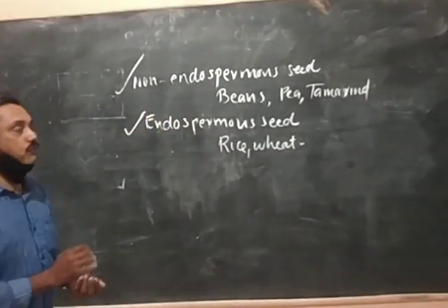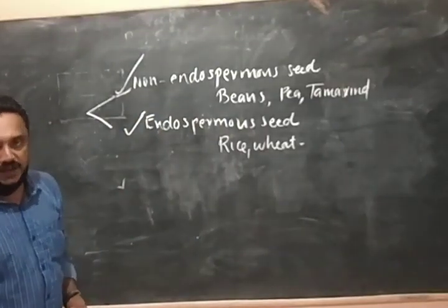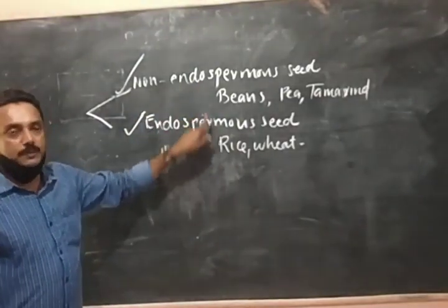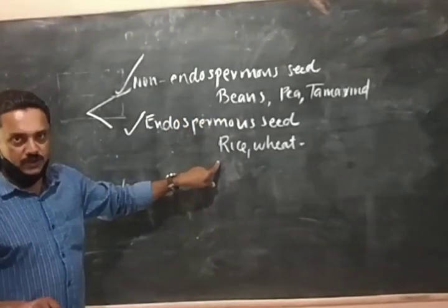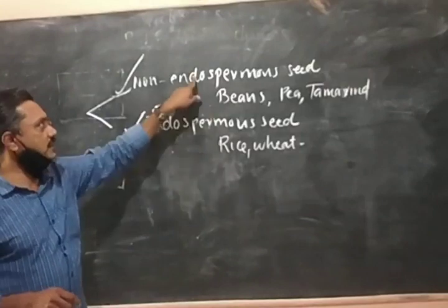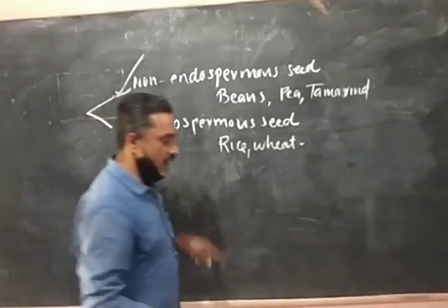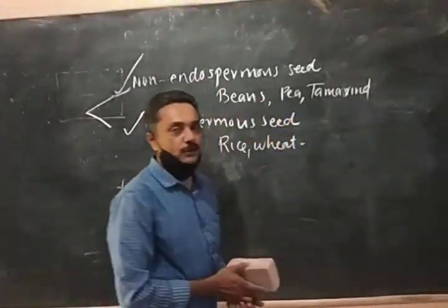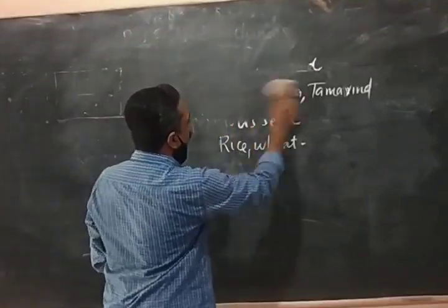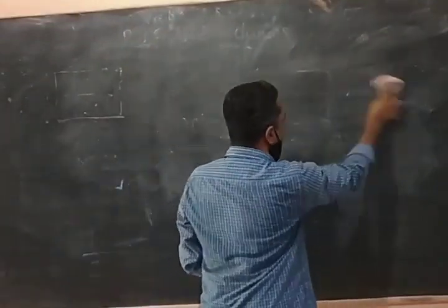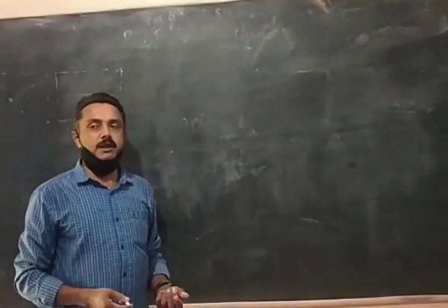There are two types of seeds based on the presence or absence of endosperm: endospermic seed (albuminous) and non-endospermic seed (exalbuminous). Endosperm development may be of cellular or nuclear type. Endosperm may be present or absent in the mature seed.